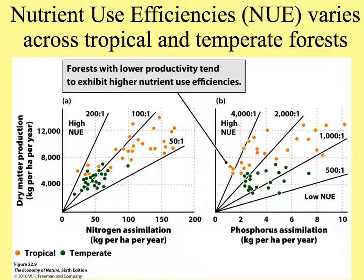These figures show that nutrient use efficiency varies a lot across tropical and temperate forests. In general, tropical forests are more productive than temperate forests in dry matter production measured as kilograms per hectare per year, partly because plants can grow all year in most tropical places. The graph on the left shows nitrogen assimilation, with dark dots representing temperate forests and yellow dots tropical forests, and the graph on the right shows phosphorus assimilation.